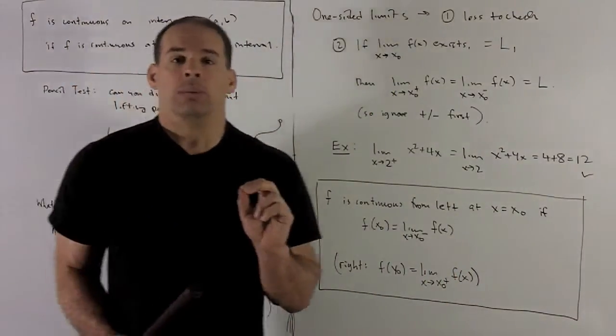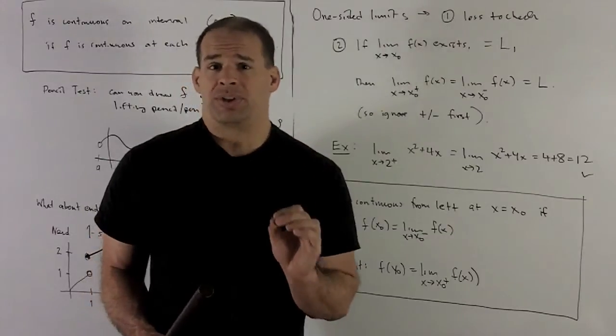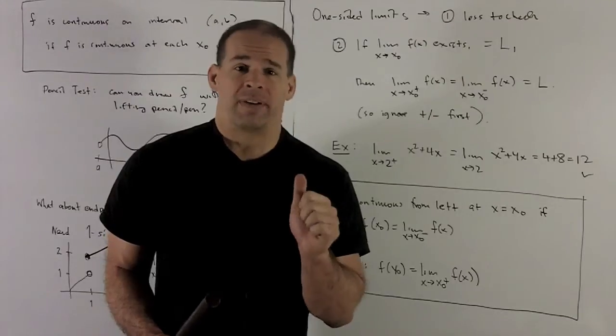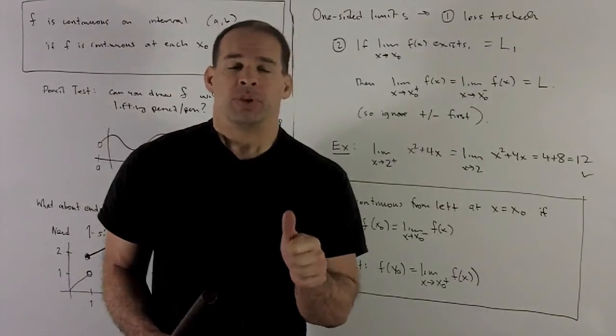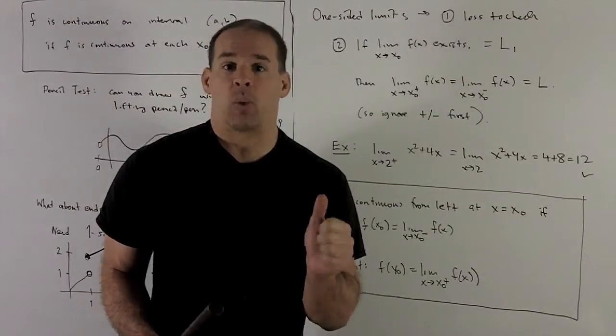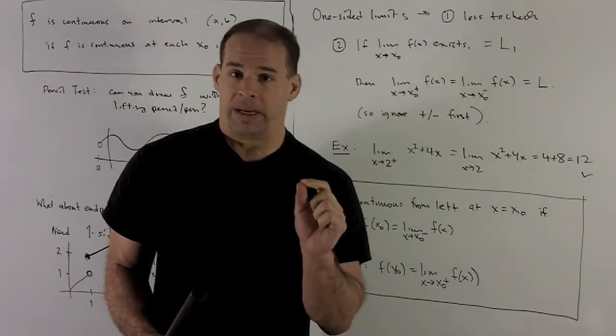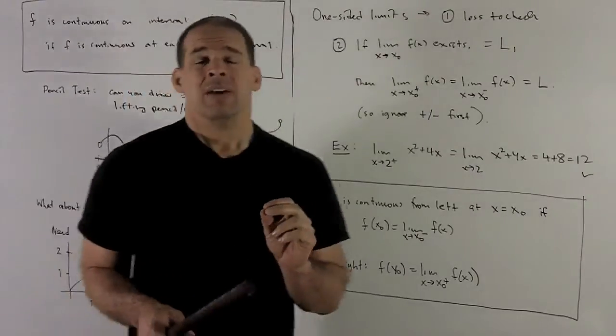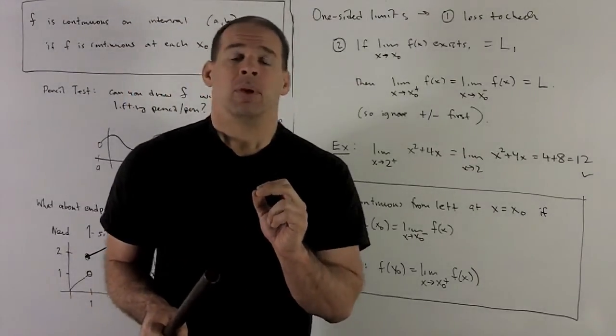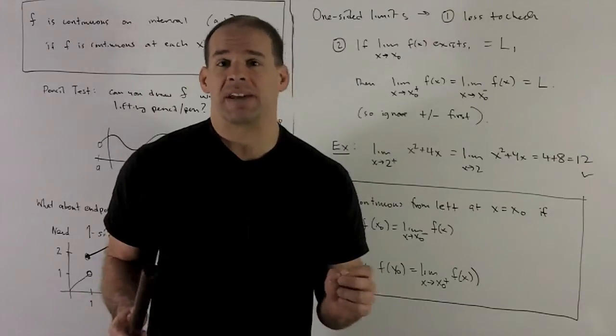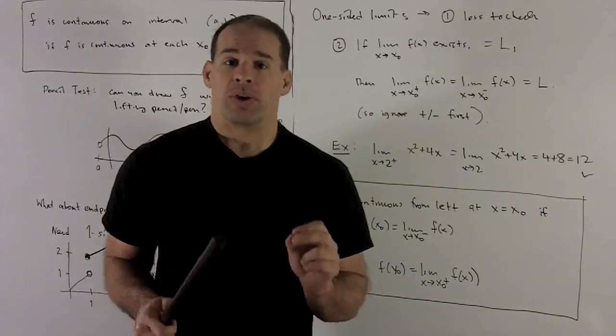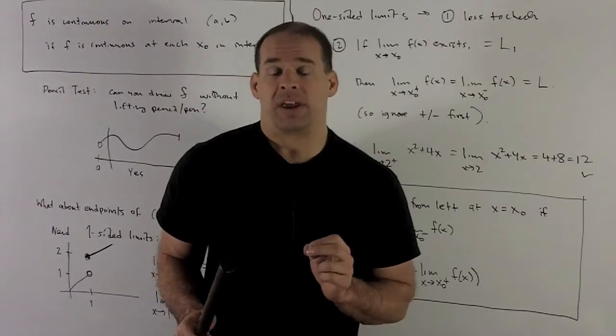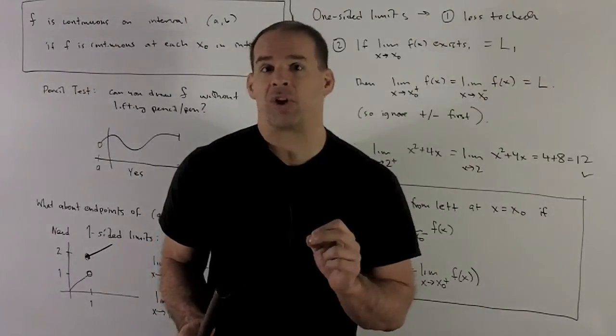Now some things to note, one-sided limits tend to put students off, but really they shouldn't because for one, it's less to check. When you're trying to find a one-sided limit, you don't have to check both sides. You only have to check one. So in that way, they're a little bit nicer. Another thing, if you're asked to find a one-sided limit, well, if you can find the limit from both sides, you get the one-sided limits for free. So when you're asked to compute a one-sided limit, see if you can do it without the plus or minus in there. If you can, you've already got your answer.